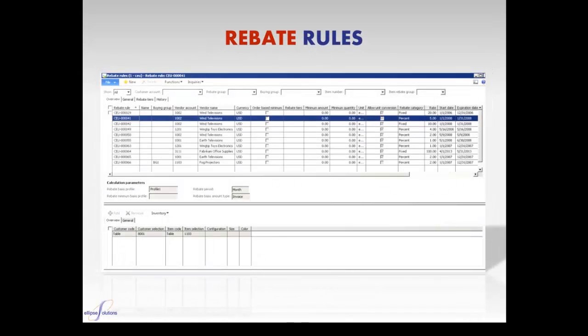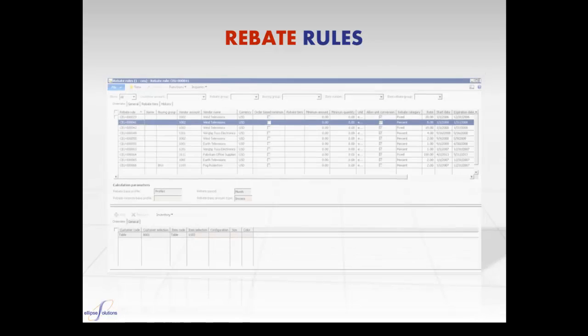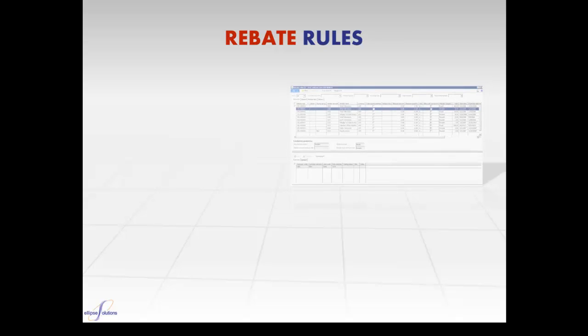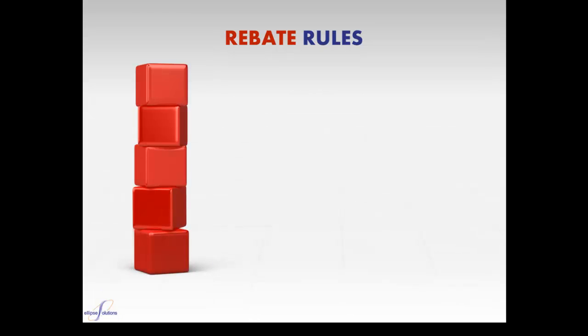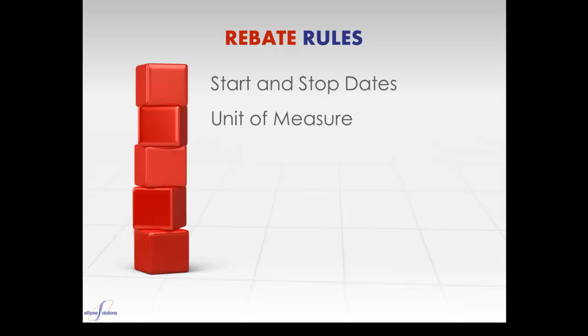With Rebates for AX from Ellipse Solutions, the rebate rules or agreements are created and stored in one system. The rules can be generated for customers or groups of customers and buying groups, and are associated to customer, item, quantity, minimum amounts, and vendor. Rules can be set up with separate dates that automatically start and stop and can include unit of measure conversion calculations, both of which serve to eliminate manual tedious processes.